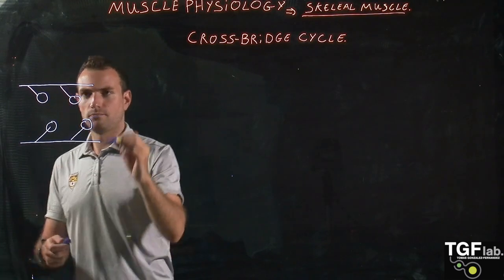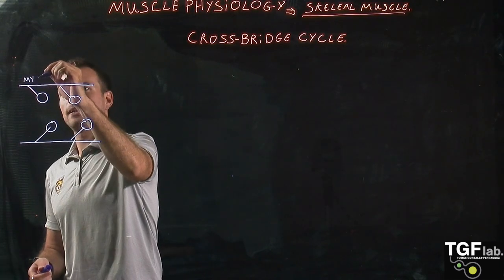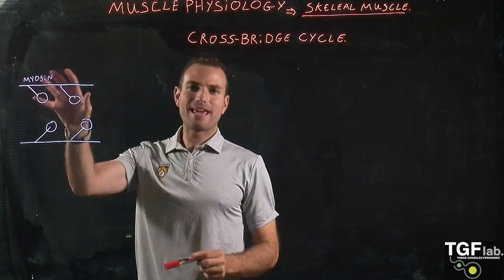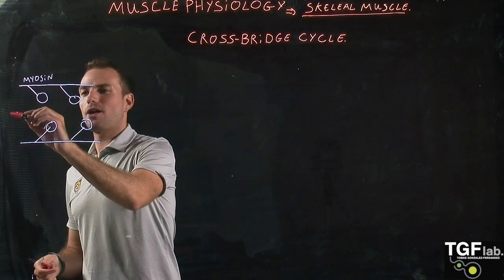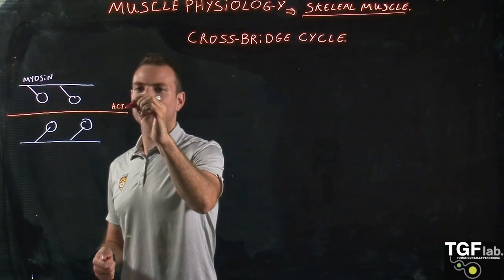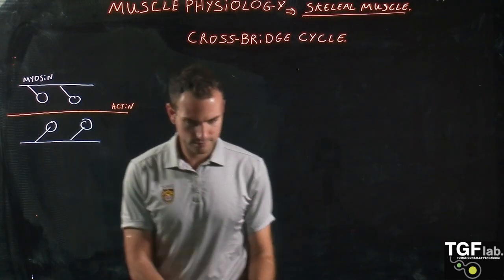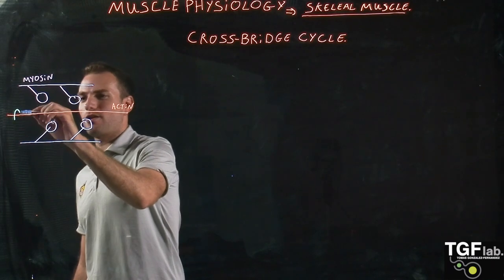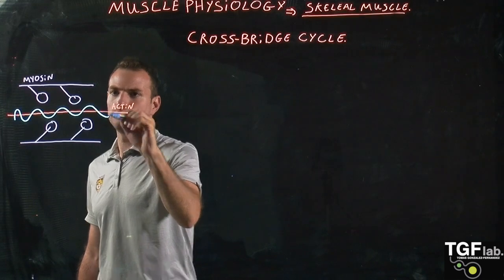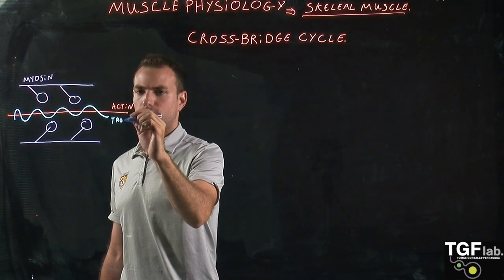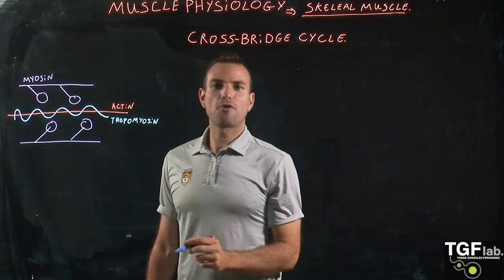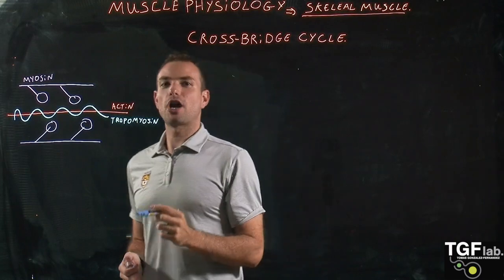Myosin. So here we have the myosin with the myosin heads. And these are the thick filaments. And then we also have the thin filaments that have different components. So the thin filaments have the actin. And we also have here the tropomyosin. And very importantly we also have these globular proteins which are called troponin.